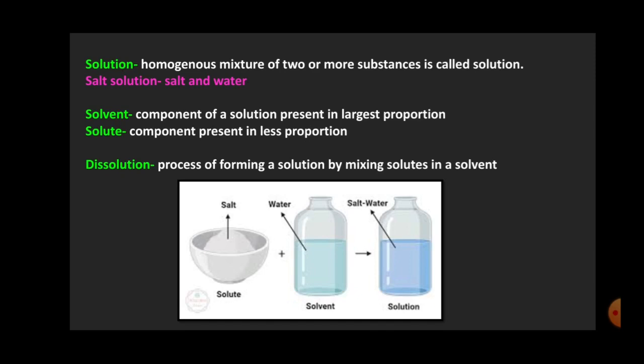Solvent is the component of the solution present in larger proportion — here it is water. Solute is the component taken in less proportion — like salt in the given picture. Dissolution is the process of forming a solution by mixing solute and solvent. When we make a solution with the help of solute and solvent, the new formed substance is called the solution, but the process is called dissolution.